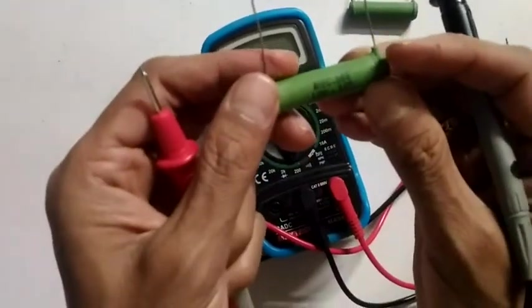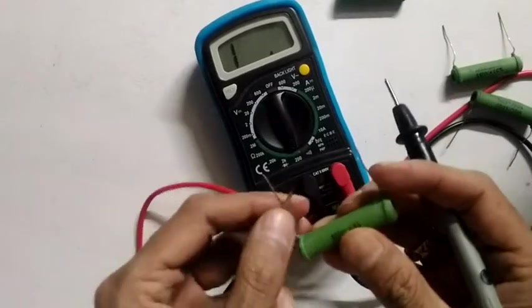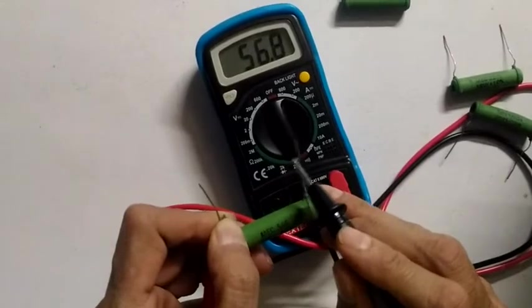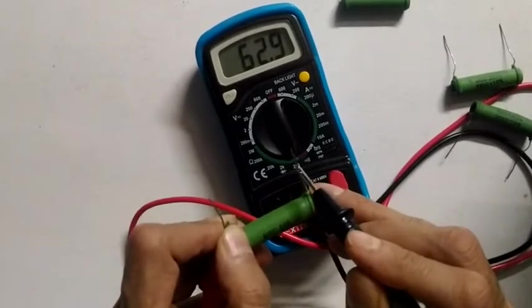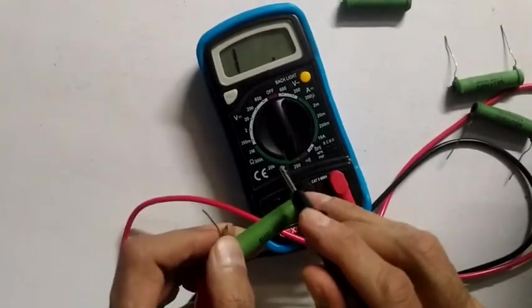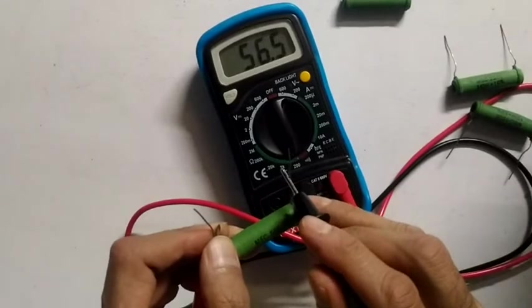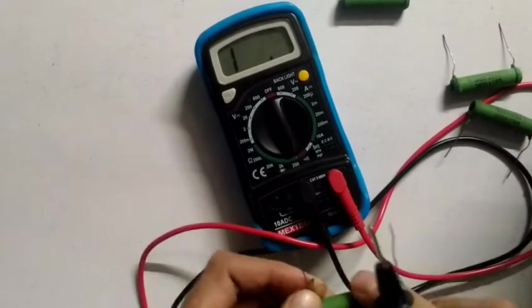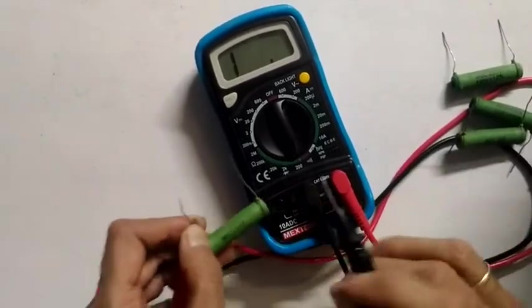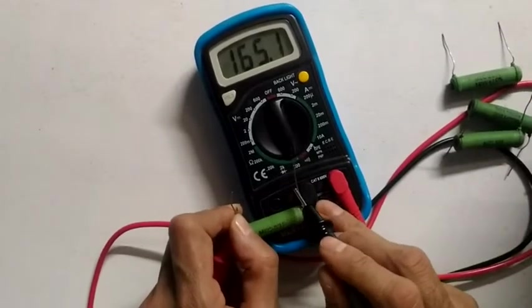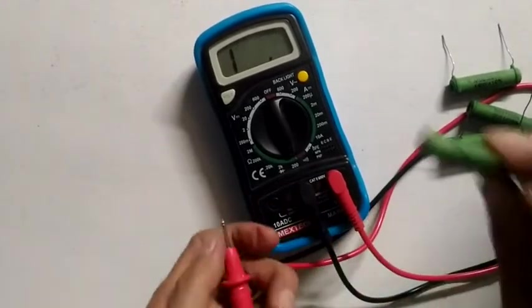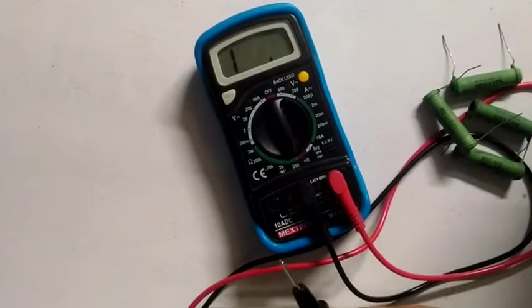Here I have a 56 ohms resistance. This should be fun to measure. This is fairly near to the value. Another one I have is 33 ohms. Let's see. Within the tolerance range and it is giving a very good reading nearby.